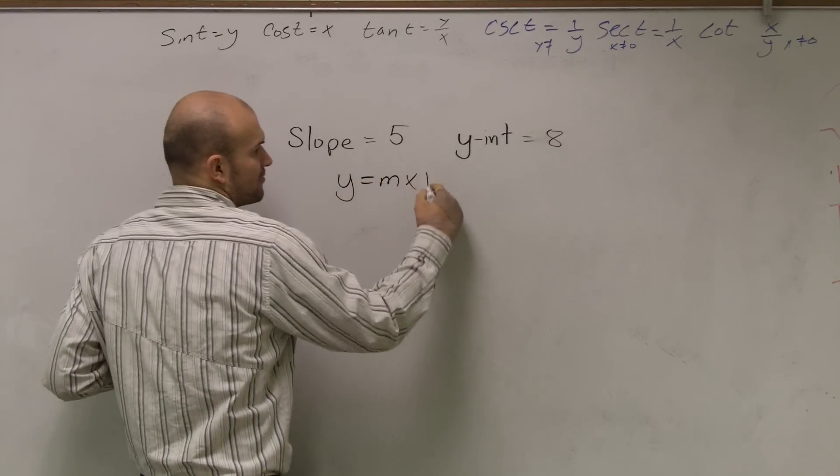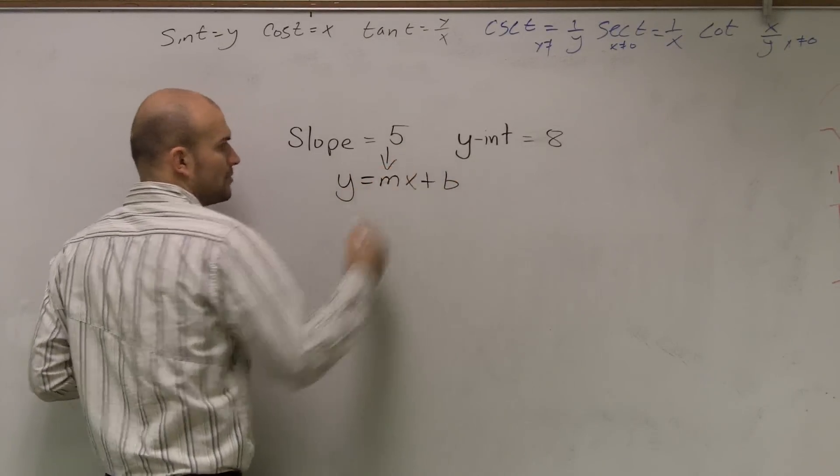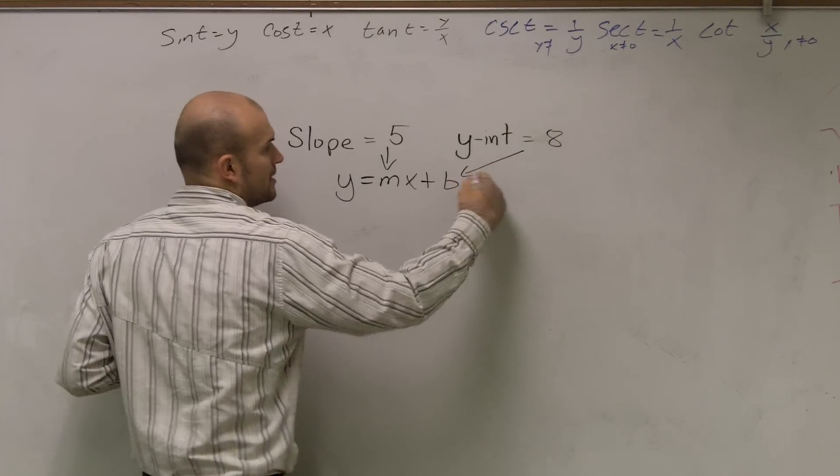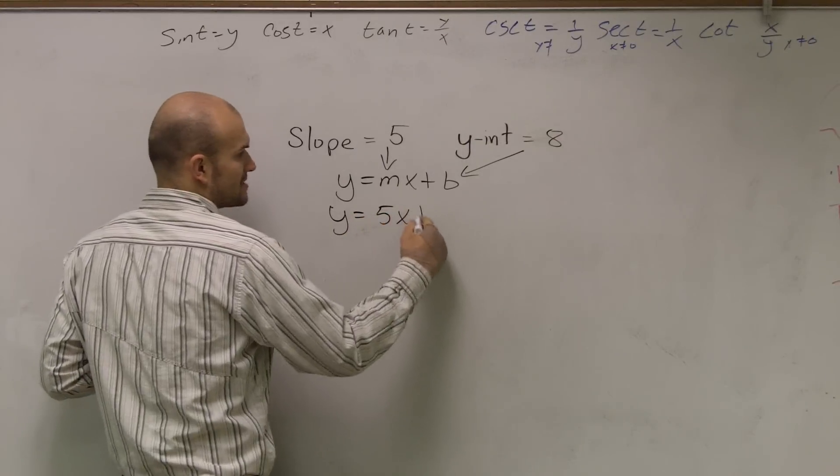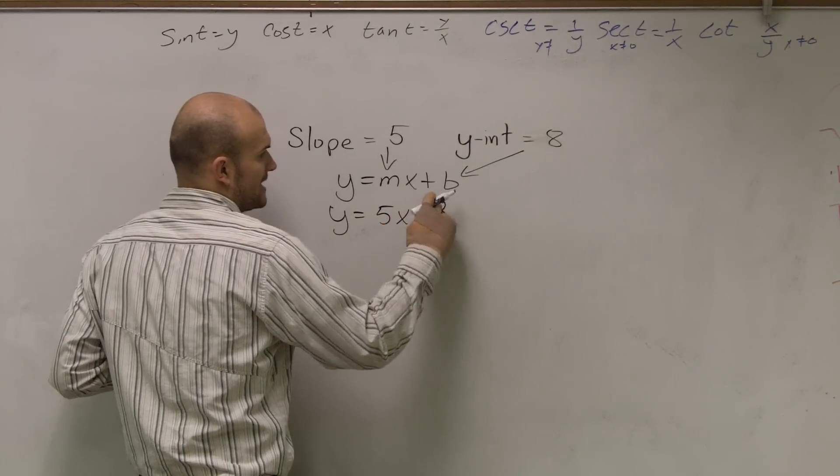So in y equals mx plus b form, we're going to plug 5 in for m and 8 in for b. So I have y equals 5x plus 8.